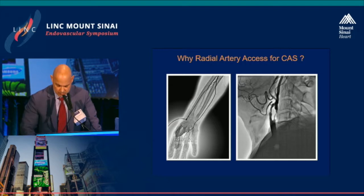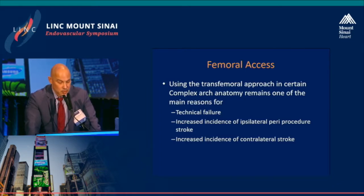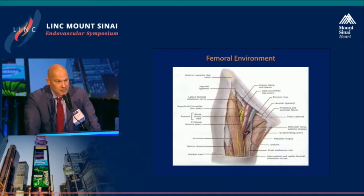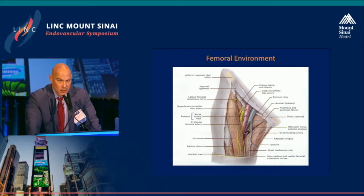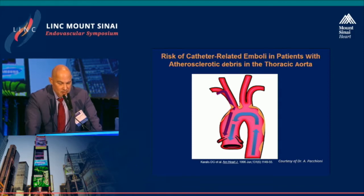So why do we do radial access? Using the transfemoral approach in certain complex arch anatomy remains one of the main reasons for technical failure, with increased incidence of ipsi- and contralateral strokes. The femoral artery is a very easy access — the one we've most been trained to use for coronary and peripheral interventions, and it's a larger artery. However, high sticks are associated with retroperitoneal hematomas, and lower sticks with fistulas and pseudoaneurysms. And if you're dragging a catheter up the thoracic aorta in a severely atherosclerotic aorta, there's potential for emboli that could result in strokes.